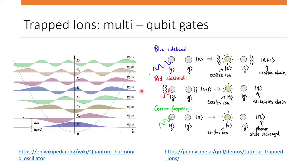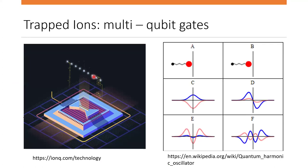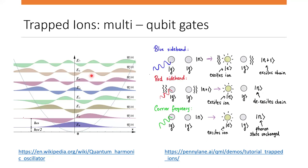In the case of the red sideband, the photon has slightly less energy than the gap, causing the chain to give its energy to the electron. There is also a carrier frequency, which is exactly the frequency of the gap — this excites an ion while the photon remains unchanged. With the help of phonons from the ion chain oscillations, we can perform multi-qubit gates on very different and distant atoms.